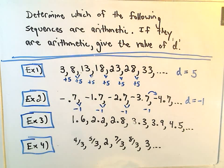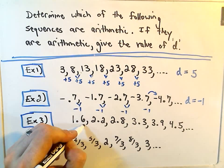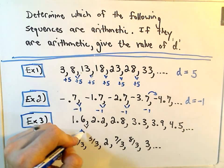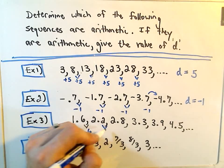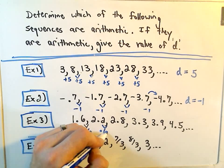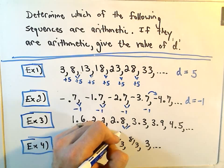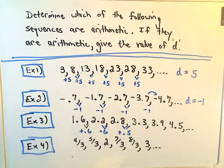And our third example, okay, well let's just test one of my numbers here. So 1.6 to 2.2, it looks like we've added on 0.6. 2.2 to 2.8, we've added on 0.6. Oh, 2.8 to 3.3 though, we've added on positive 0.5.